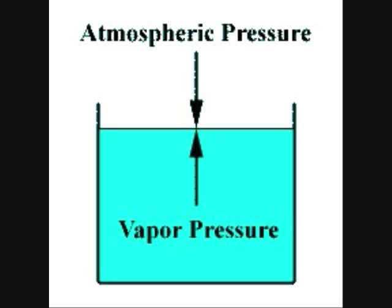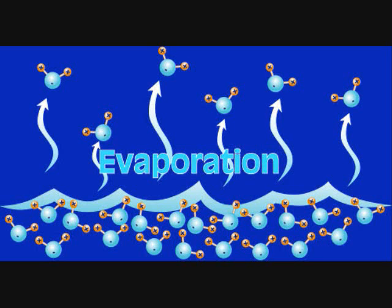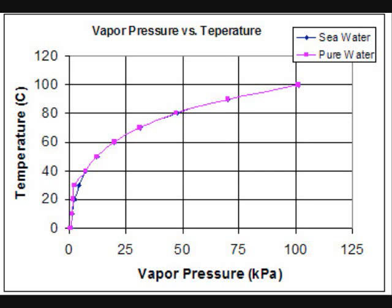In all liquid substances, the highest energy molecules will escape the liquid and enter gaseous phase. This is why we have evaporation at temperatures below boiling points. A substance's vapor pressure shows the pressure exerted by the evaporating liquid on the surroundings, and thus indirectly shows just how much is evaporating.